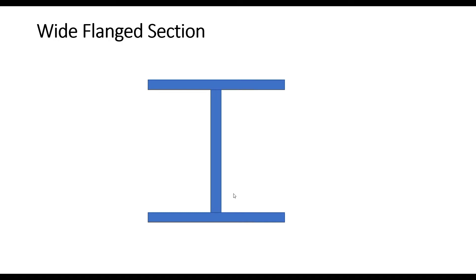We will start with the wide flange section, or I-section as called by many, though there is a difference between the two. For all the sections that we will discuss, we will consider the local X coming out of the page or out of the screen towards you. Thus the local Y and local Z would look like this. The green colored arrow represents the local Z axis and the red colored arrow represents the local Y axis, both in their positive directions. If you have a question about how the local axis of the members are represented by default, please revisit the two sessions where we have discussed this — the link is appearing on the screen right now.